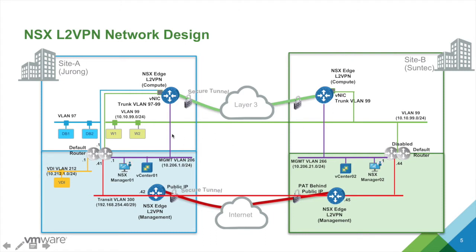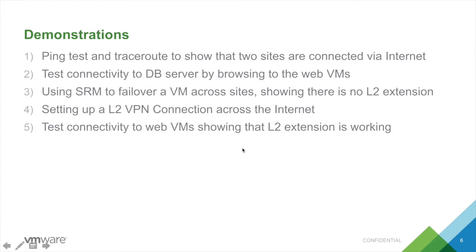For the compute side, there are a couple of VLANs I'd like to extend. In my case I'm extending VLAN 99 across the two sites, so I've spun up another NSX Edge with L2 VPN to connect them together. I'll do a ping test to show that the two sites are connected via the internet, and show connectivity from VMs on both site A and site B.